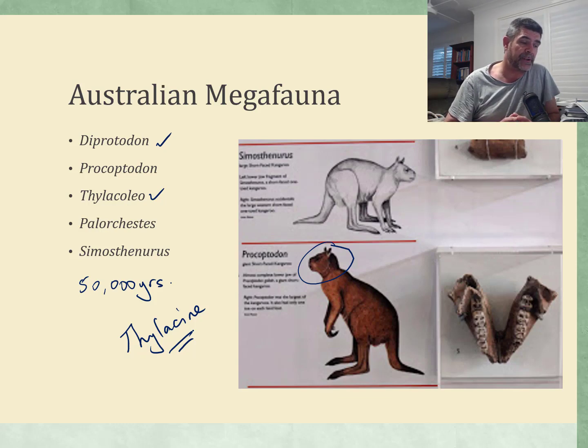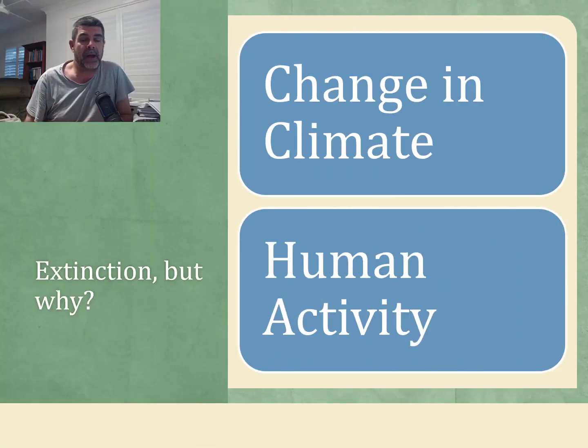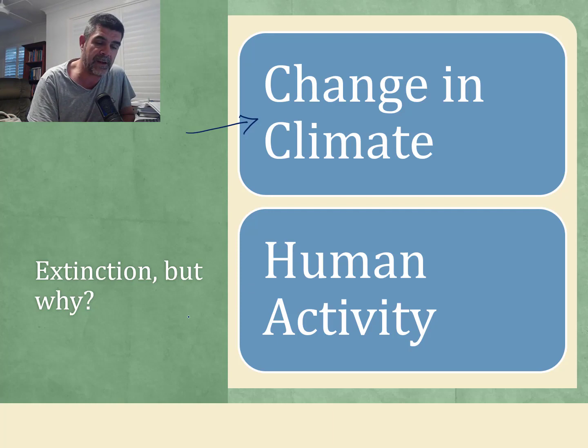There's probably two major schools of thought. The important thing when you're looking at extinction events is the idea of cause and evidence. What is your proposal in terms of what might have caused this major change in the Australian fauna, and what evidence is there to suggest that this is the case? The two main causes we want to investigate are climate change and human activity.